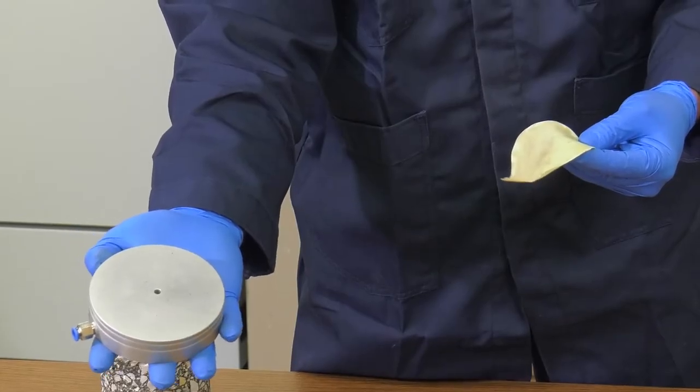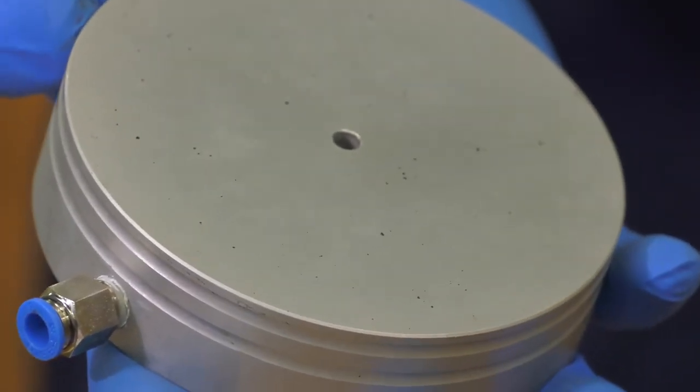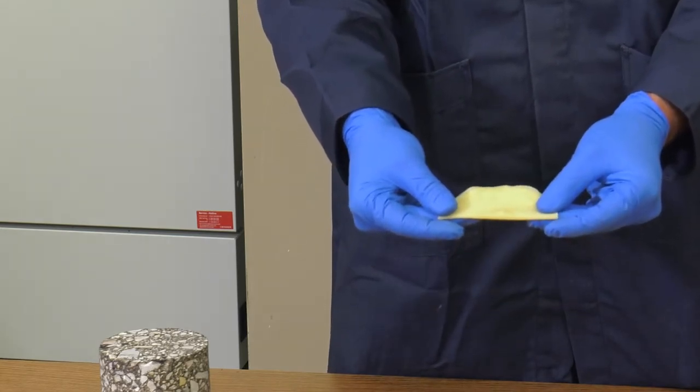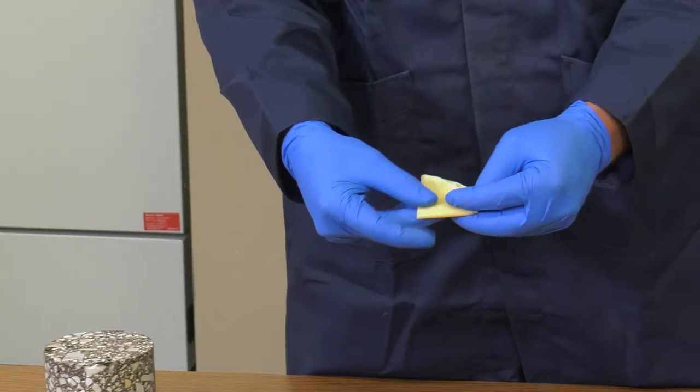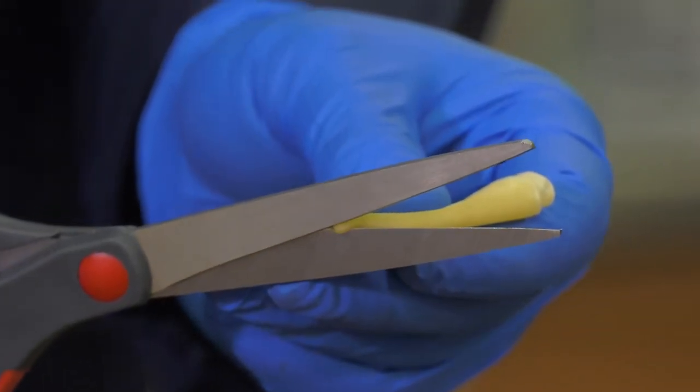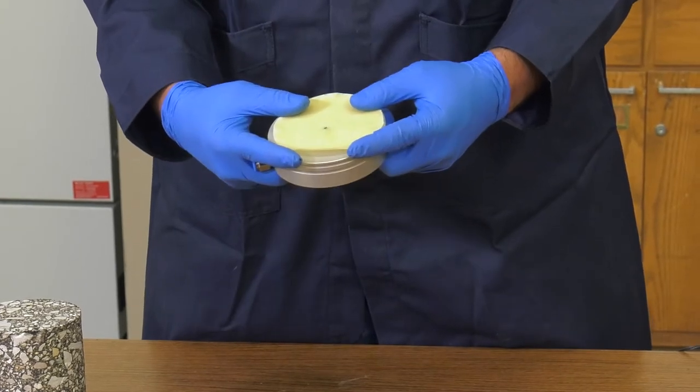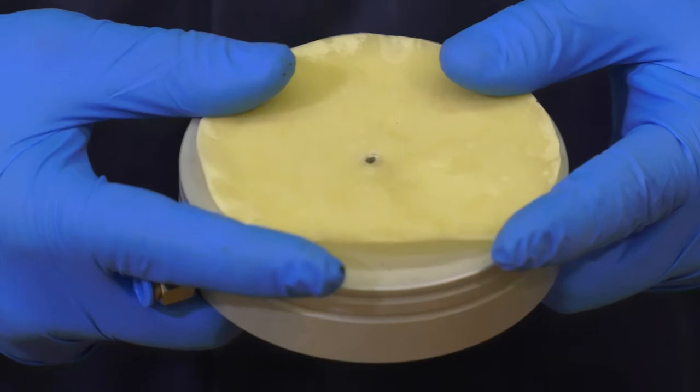For the lower platen, you'll need a hole in the middle of the double-layered membrane that aligns with the vent on the platen for drainage. Repeat the steps to create a double-layered membrane. When assembled, fold it into quarters and then cut off the point of the fold to make a hole, or punch a hole in the membrane. Unfold and align the hole on the membrane with the vent on the lower platen.